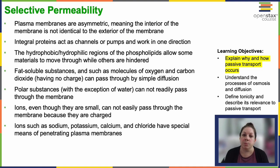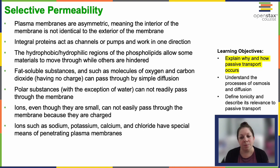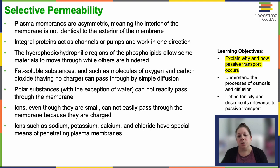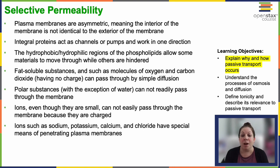The plasma membrane is asymmetric, meaning the interior of the membrane is not identical to the exterior of the membrane. You already know this — we've talked about the polar membrane heads as opposed to the non-polar fatty acid tails. Sometimes this means we're going to have to have some sort of special protein to create a channel or a pump to move things through that membrane, because not everything can pass through on its own.